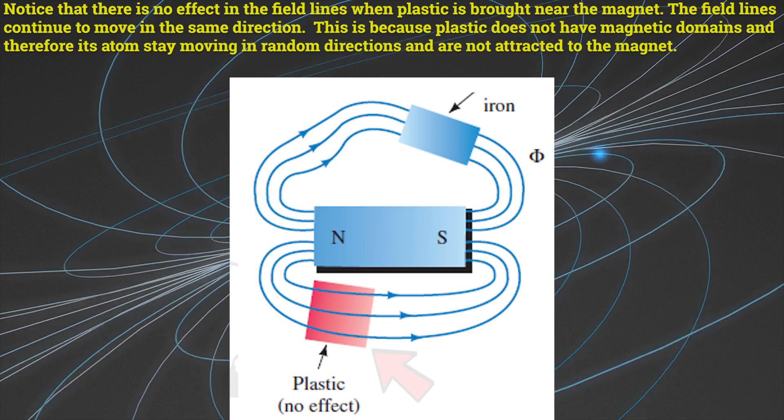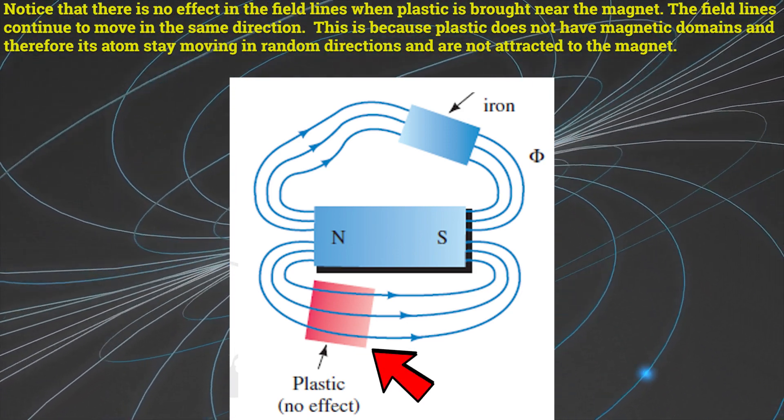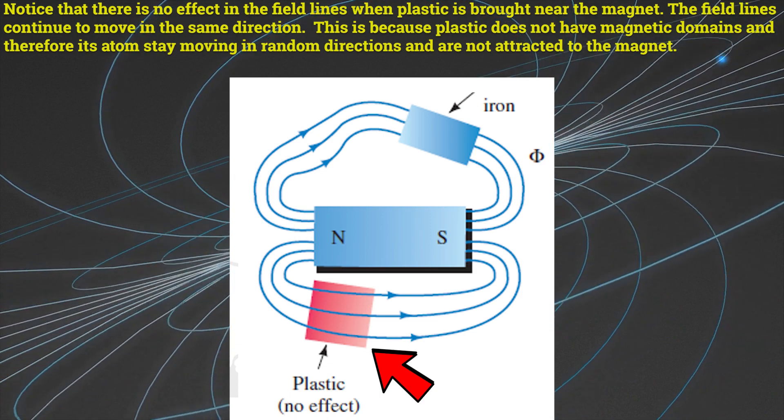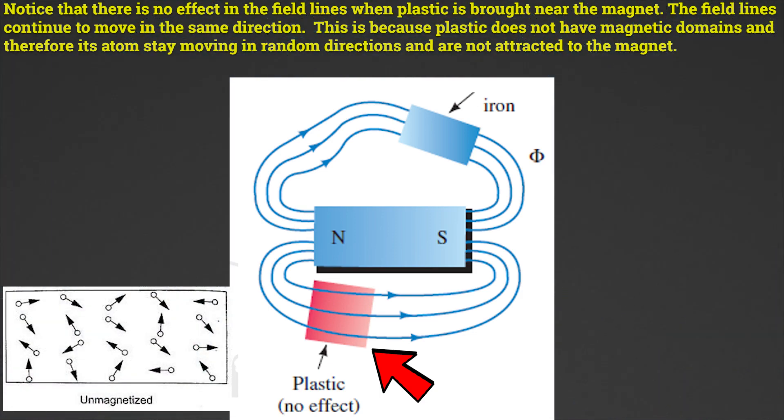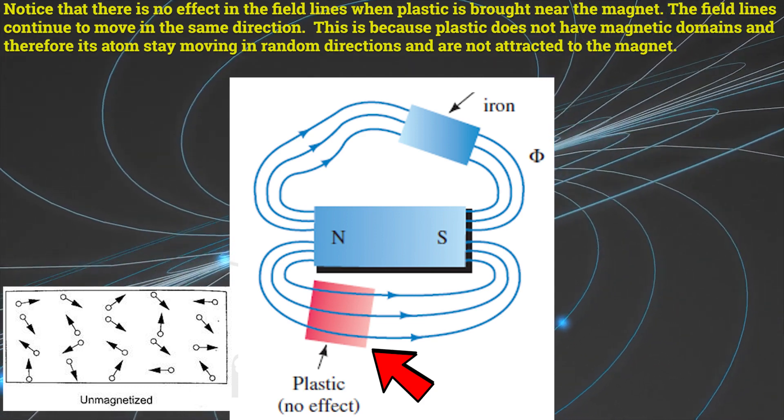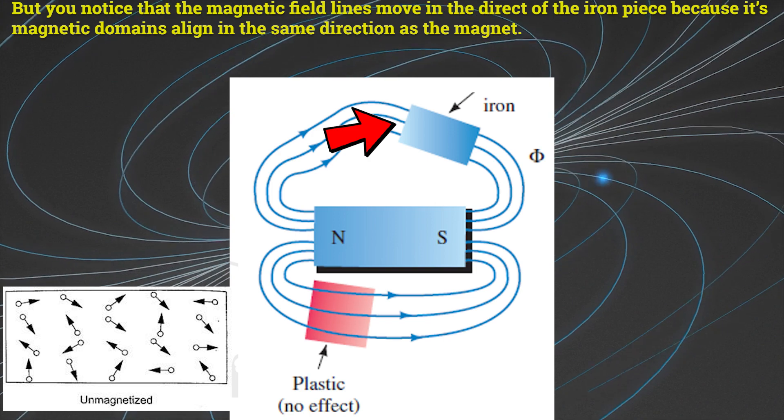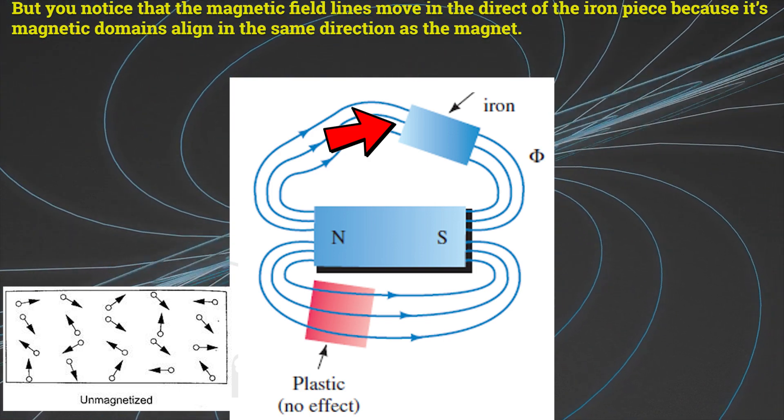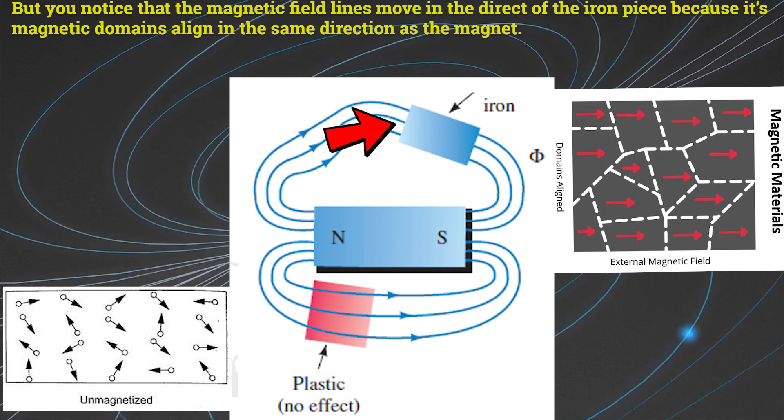Here's another example. Notice that there is no effect in the field lines when plastic is brought near the magnet. The field lines continue to move in the same direction. This is because plastic does not have magnetic domains and therefore its atoms stay moving in random directions and are not attracted to the magnet. But you notice that the magnetic field lines move in the direction of the iron piece because its magnetic domains align in the same direction as the magnet.